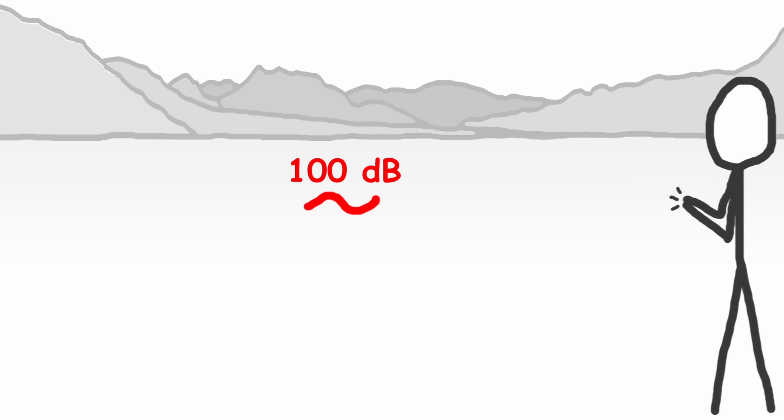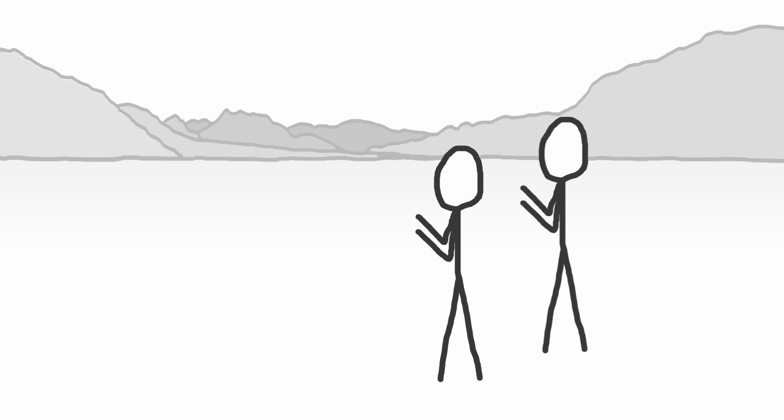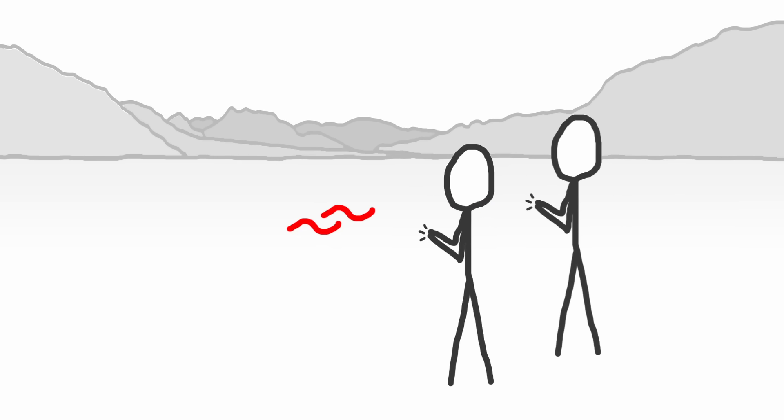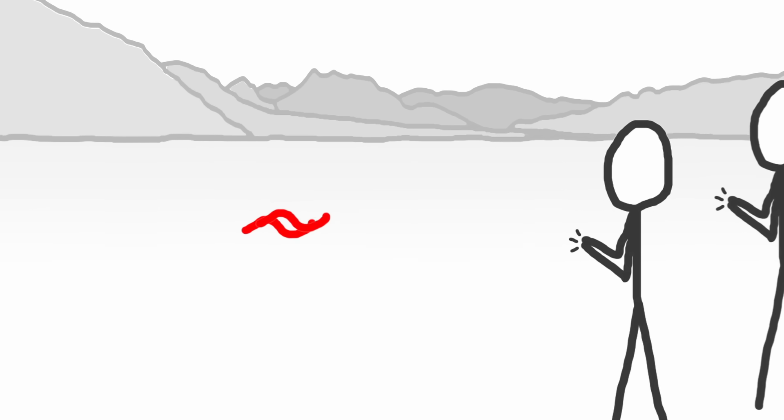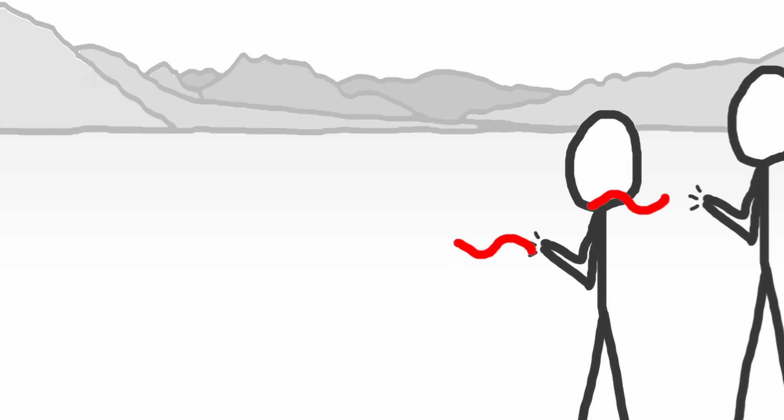The average clap produces a sound of around 100 decibels. Now, if every person clapped at once, the sound waves wouldn't just add up to form one massive sound wave. When they overlap, some waves would amplify each other like this, but others would cancel each other out.